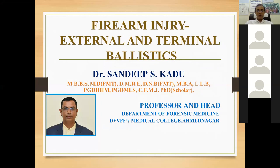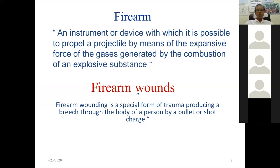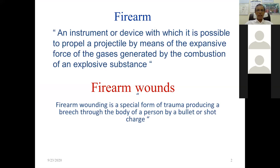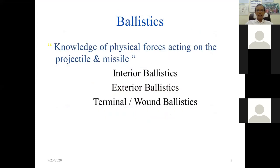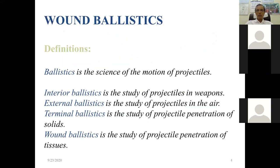A firearm is an instrument or device with which it is possible to propel a projectile by means of the explosive forces of gases generated by combustion of an explosive substance. In short, firearm wounds are caused by high velocity projectiles like pellets or bullets. Pellets are used in shotgun or smoothbore firearms, while bullets are used in rifle firearms. Ballistics is the science of the motion of the projectile.